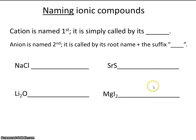Okay, so here we go. Let's look at naming ionic compounds. You probably already know this. For example, you probably recognize this as sodium chloride. How did you know the name was sodium chloride? Well, you just probably knew it, but here's rules to help you out. The cation is named first. That would be the metal, sodium, and it's simply called by its name.